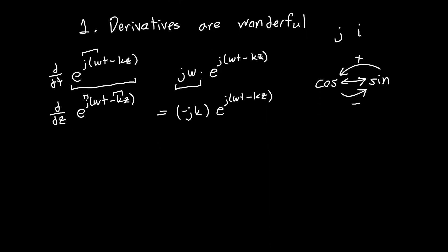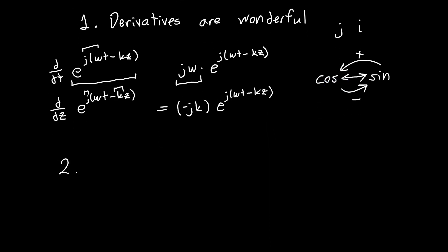But the real power of complex exponentials is with interference. And this is really why I got on the complex exponential bandwagon. Because let's say that you've got two waves. One's maybe a cosine. And maybe the other is a sine with some phase difference. So maybe you've got a cosine of omega t minus kz. And then you've got a sine of omega t minus kz. And maybe you've got some extra phase in here, phi.